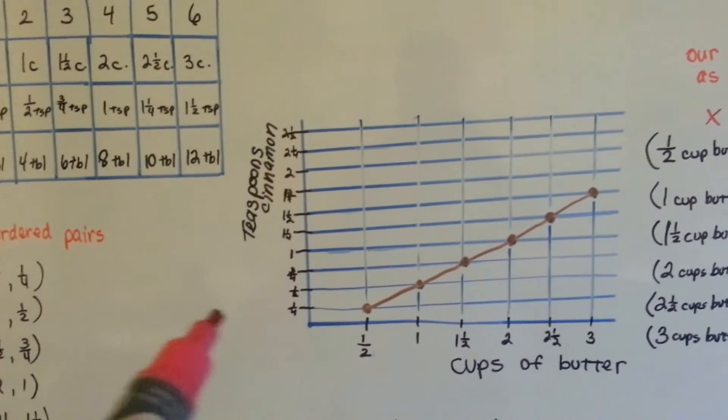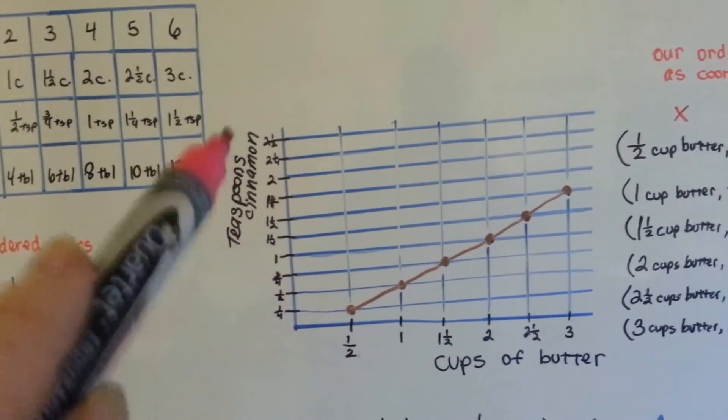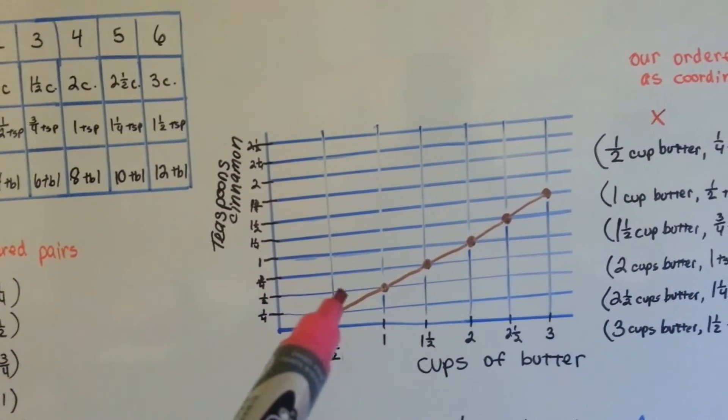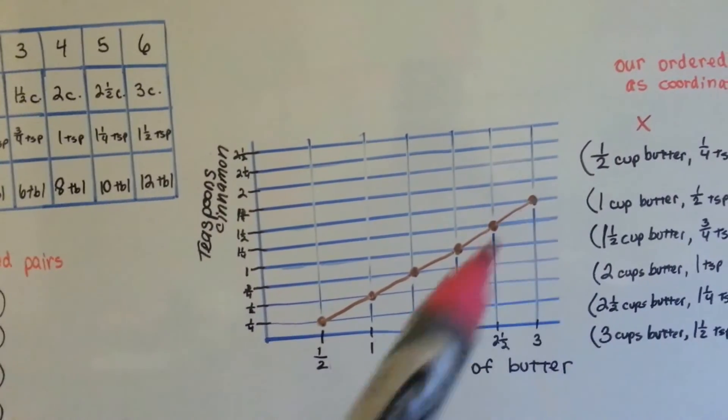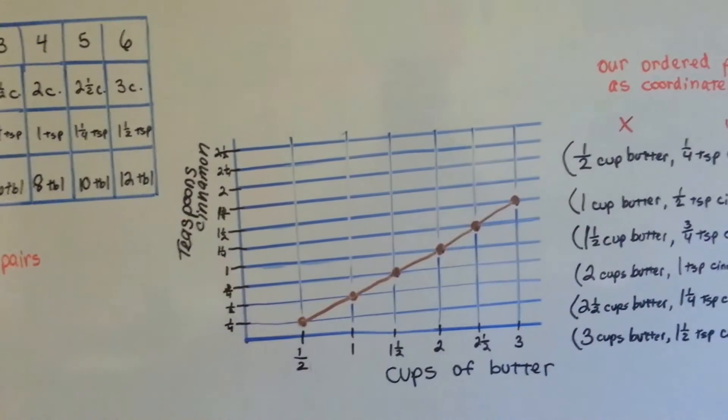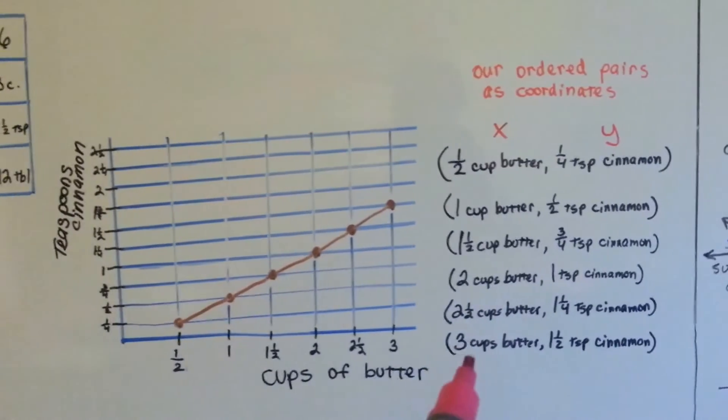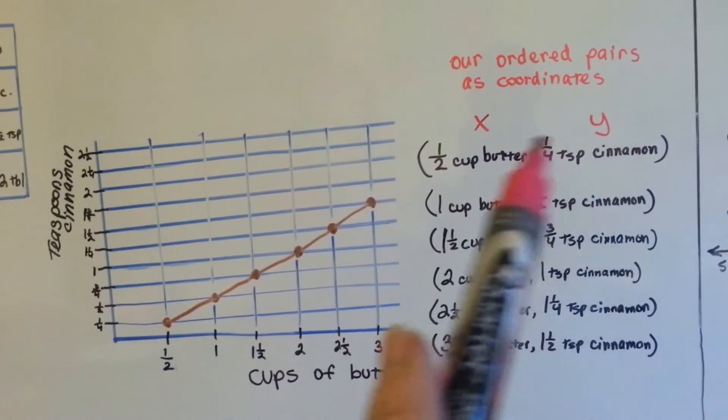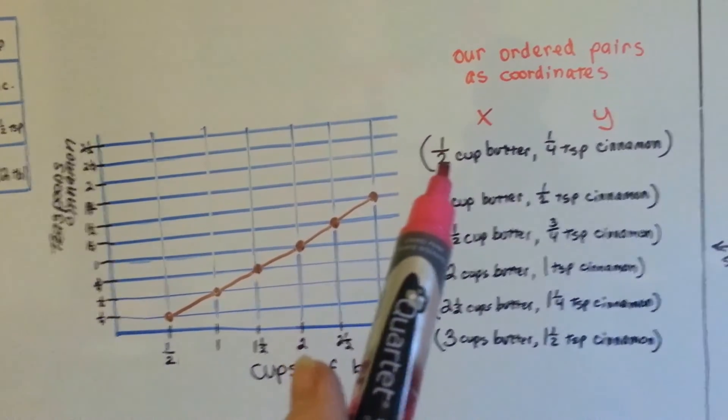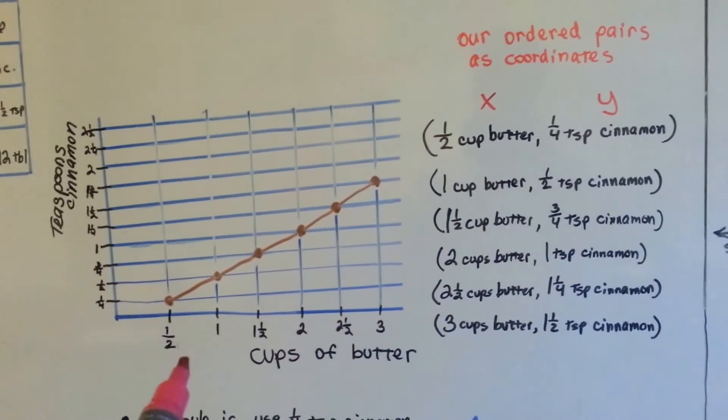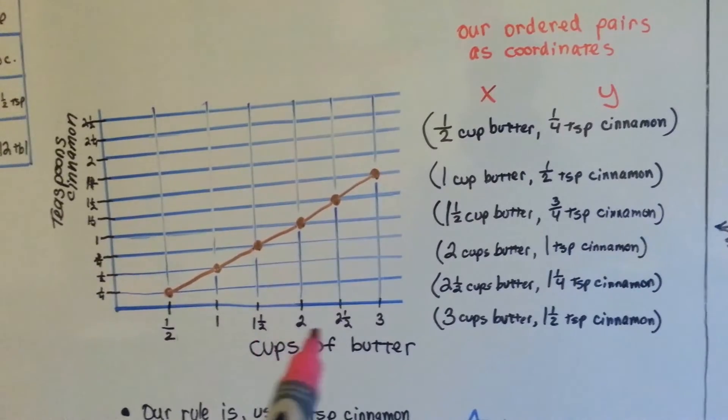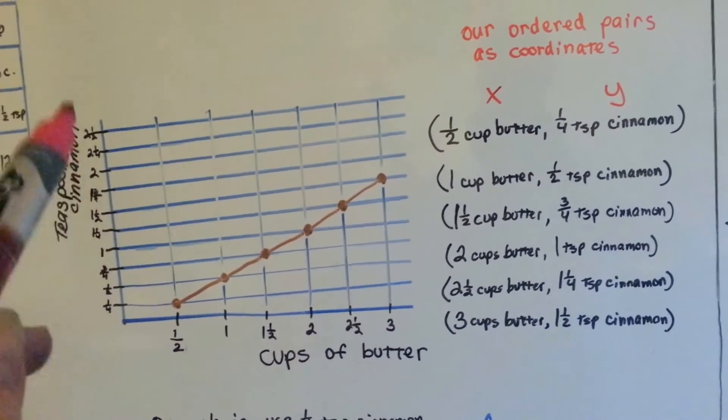If we made this on a coordinate grid, this would be the teaspoons of cinnamon and this would be the cups of butter. It would go up perfectly in an angle. See that going up the slope? Our ordered pairs would be, for X and Y, half cup butter, quarter teaspoon cinnamon. The cups of butter are on the X-axis and the Y-axis is the teaspoons of cinnamon.